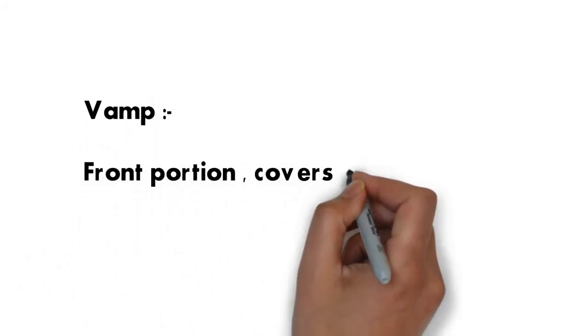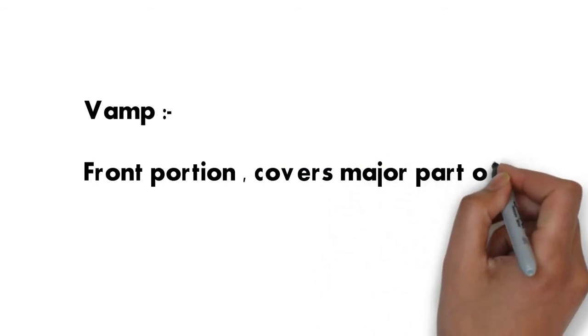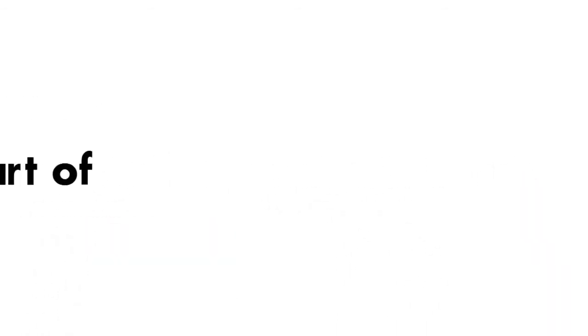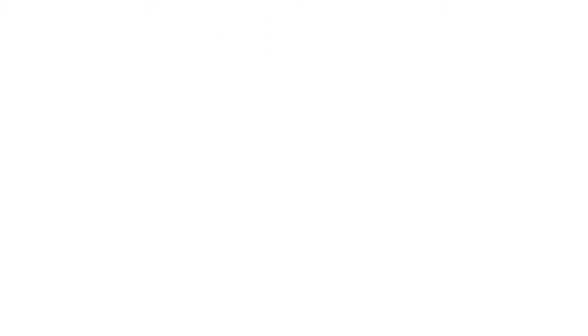Vamp: front portion covers major part of the shoe is called vamp. It also covers the major area of the shoe.